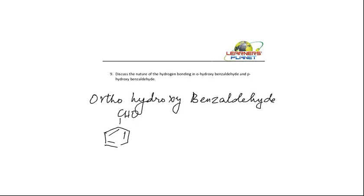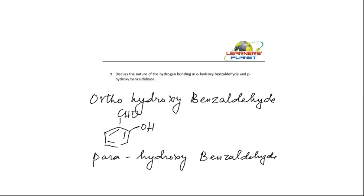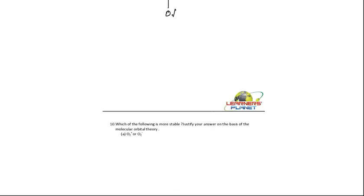This is Benzaldehyde, and if in the ortho position there is an OH group, it is known as Ortho-Hydroxybenzaldehyde. For Para-Hydroxybenzaldehyde, this is Benzaldehyde and in the para position if there is an OH group, it is Para-Hydroxybenzaldehyde.